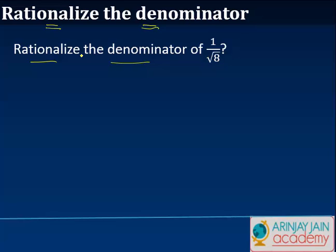So first question is, what do you mean by rationalization of the denominator? What this means is that instead of having a square root over here, how is it that I can actually have a number — a natural number, or a whole number — or basically not have a root.